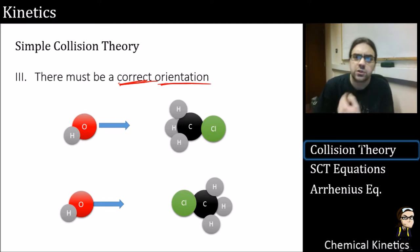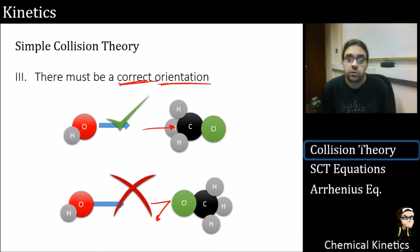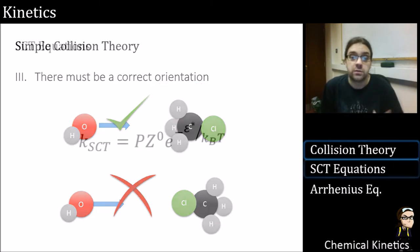And then of course it must be the correct orientation. Generally speaking, if this substitution reaction wants us to collide here, it's going to go ahead. Every collision here is going to bounce off. These are the three factors from simple collision theory: we must have the right orientation, there must be the right energy, and there must be a collision in the first place.